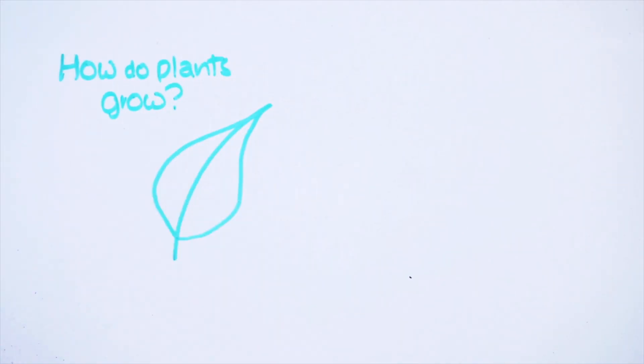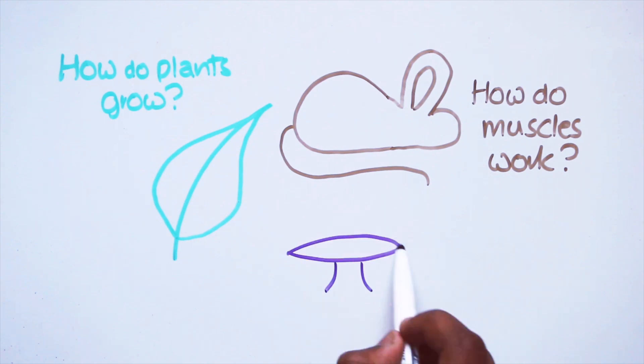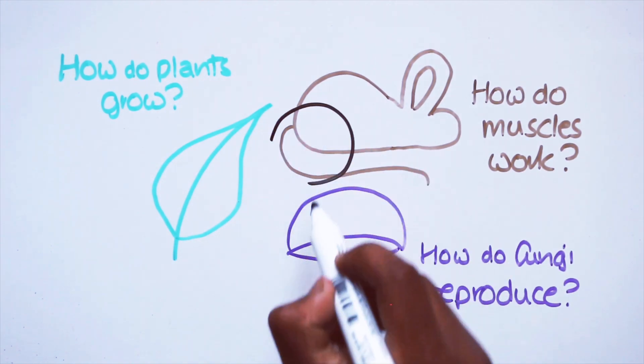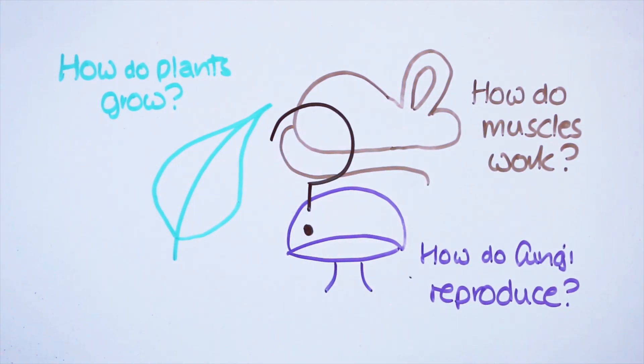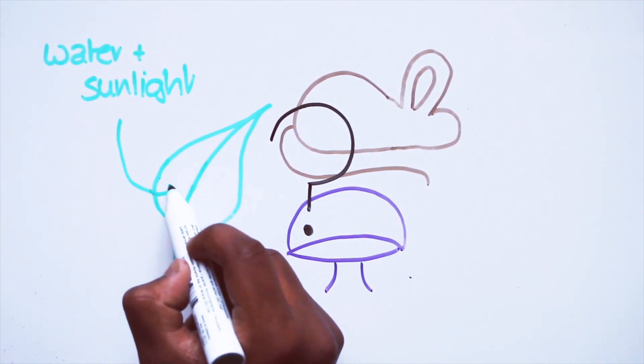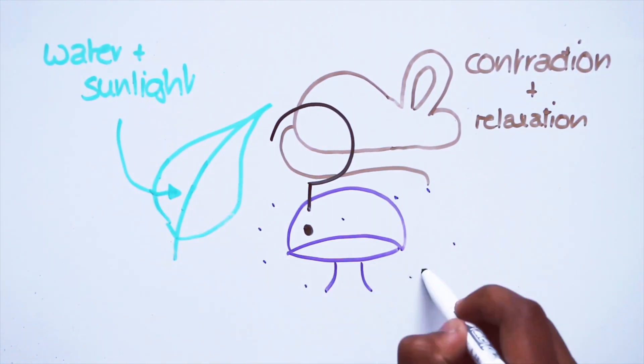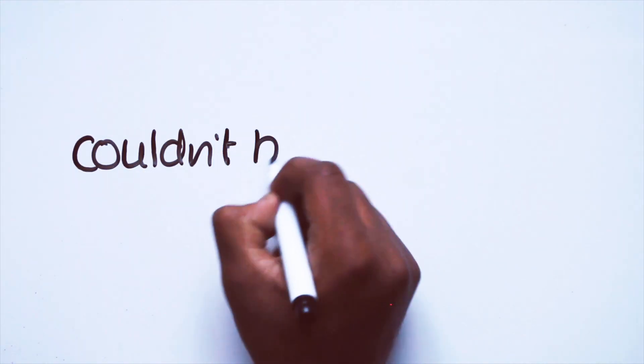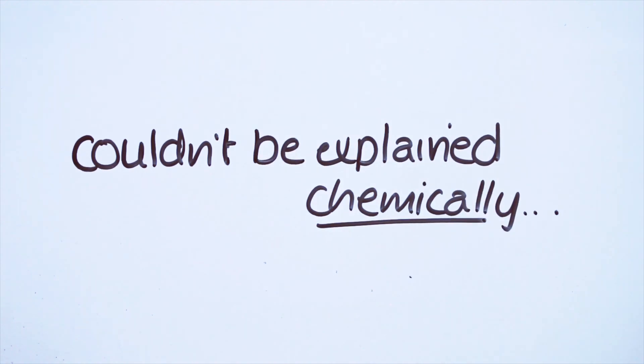Before the 20th century, biological function simply couldn't be explained through the knowledge of chemistry at that time. All of these questions were kind of a mystery to chemists. Sure, biologists could explain them at the macroscopic level, but exactly how and why this was all possible just couldn't be explained as a product of chemistry.